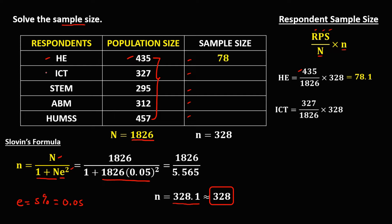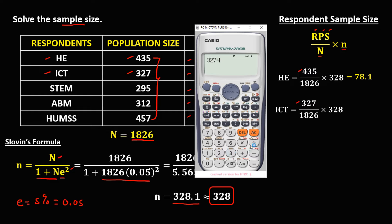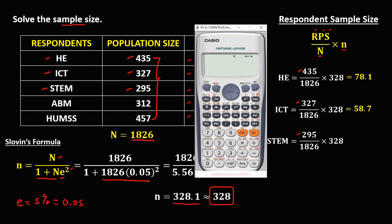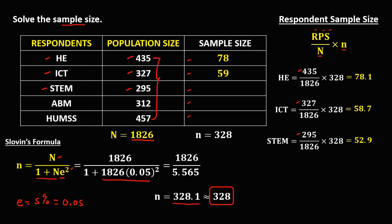For ICT, the population size is 327. So we have 327 divided by 1,826, times 328, which equals 58.7, approximate to 59. For HUMSS, the population size is 295. So we have 295 divided by 1,826, times 328, which equals 52.9, approximate to 53.